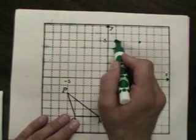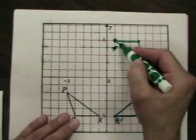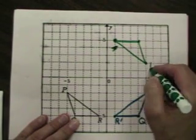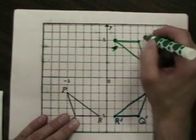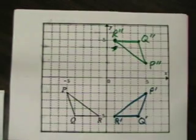There's my new one. Let's see. This was where P went to. It becomes P double prime, Q double prime, and R double prime.